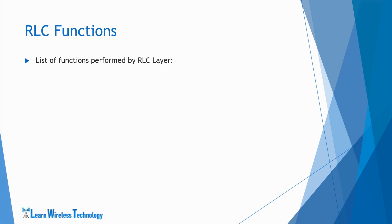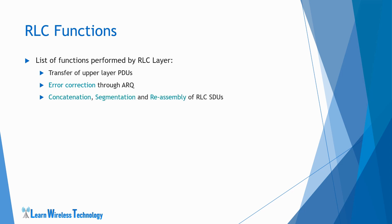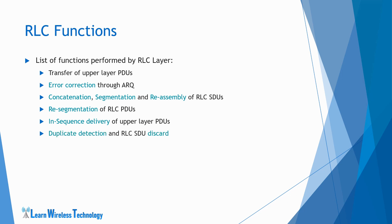Let's look at the list of functions performed by the RLC layer: transfer of upper layer PDUs, error correction through ARQ, concatenation, segmentation and reassembly of RLC SDUs, resegmentation of RLC PDUs, in-sequence delivery of upper layer PDUs, duplicate detection and RLC SDU discard, and protocol error detection and recovery. These are the functions performed by the RLC layer.